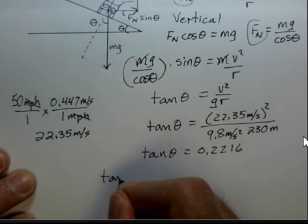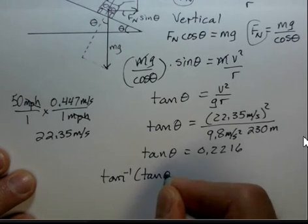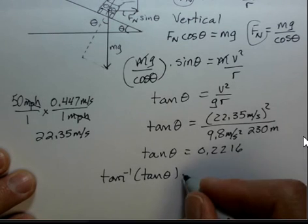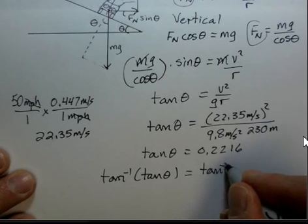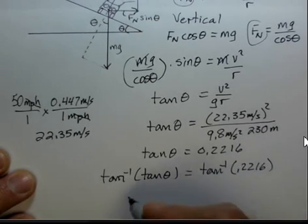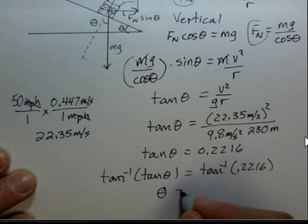To find the value of theta, I have to get it out of control of the tangent. So I need to take inverse tangent of both sides. This is a mathematical function called inverse tangent. It's the inverse function to tangent. I have to do that operation on both sides.